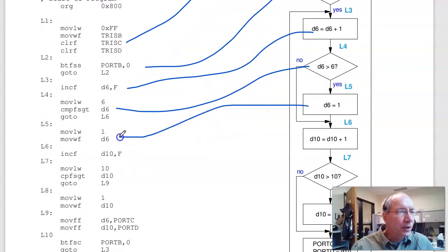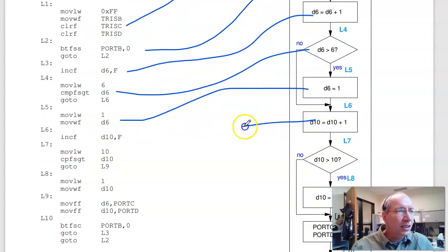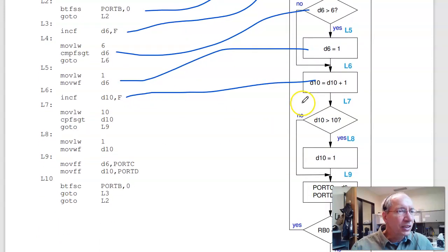Label 5. Move 1 to D6. 1 goes to W, W goes to D6. Increment D10, put the result in D10. Check - move 10 to W, skip if greater than. If D10 is greater than 10, skip. If I skip, I reset it to 1. Otherwise, jump down to label 9. Label 8, move 1 to W, move W to D10.